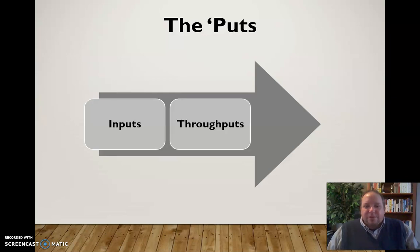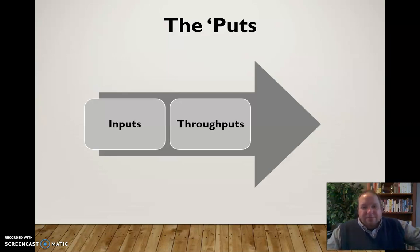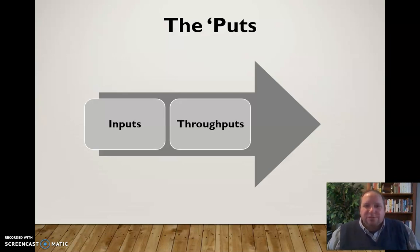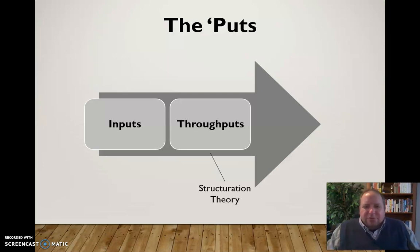Once we have inputs coming in, we go through what we call throughputs. The group takes that material or knowledge and molds it to what the group needs — they put those resources to use and change them as part of the group process. The rules and structure surrounding how a group processes those throughputs is what we call structuration theory — the rules about who's in charge, how decisions are made, whether it's democratic or one leader directing everyone else.